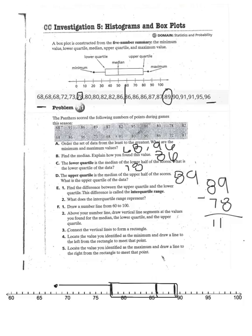And finally, for 5, locate the value you identified as the maximum and draw a line to the right from the rectangle that meets. We said that our maximum was 96, so you're going to put a 96 above the number line and connect it. Therefore, we did our box and whisker plot by using the median, the upper quartile median, lower quartile median, and the median in the minimum and maximum.